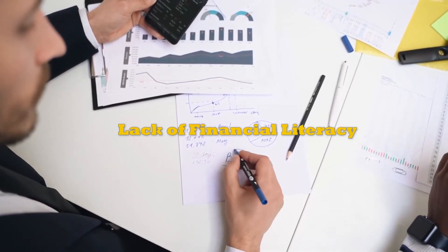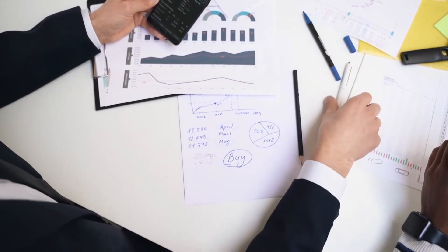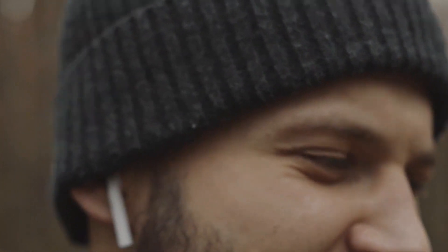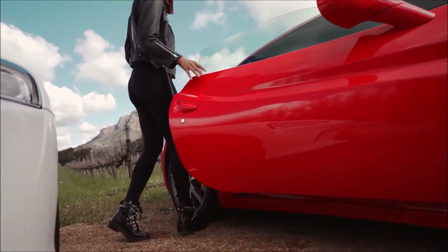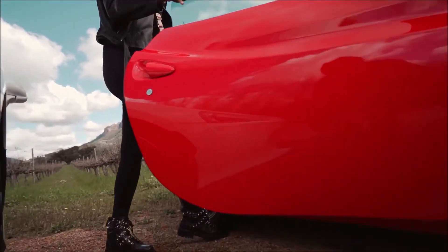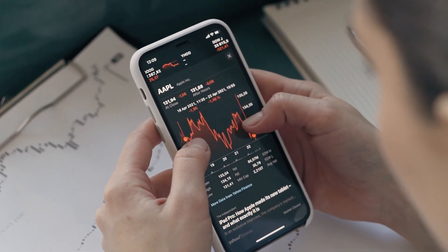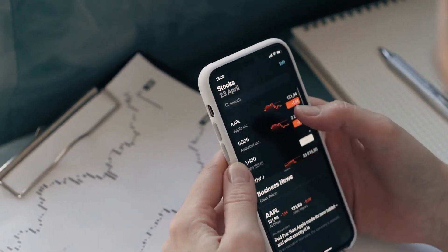Number 11 is lack of financial literacy. Many people lack basic financial knowledge, including budgeting, investing, and understanding financial products. This can lead to poor financial decisions and missed opportunities for growth. The fact that you are watching this video shows that you are on the right path — becoming financially literate increases your chances of becoming rich dramatically. Lastly, we have investment and retirement account performance. Poor investment choices or market downturns can impact the growth of retirement and investment accounts, affecting long-term financial security.